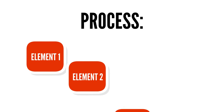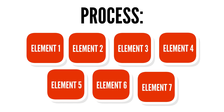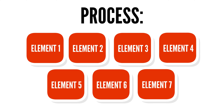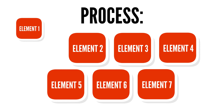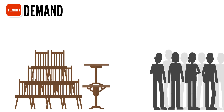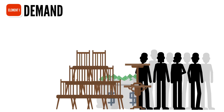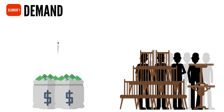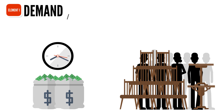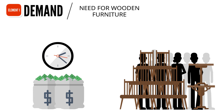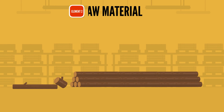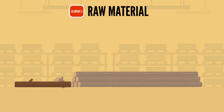Let's break it down into seven basic elements to make the concept easy to follow. Element one: demand is the quantity of goods that consumers are willing and able to purchase at various prices during a given time — example: need for wooden furniture. Element two: raw material is unprocessed material used for primary production — example: a piece of wood.